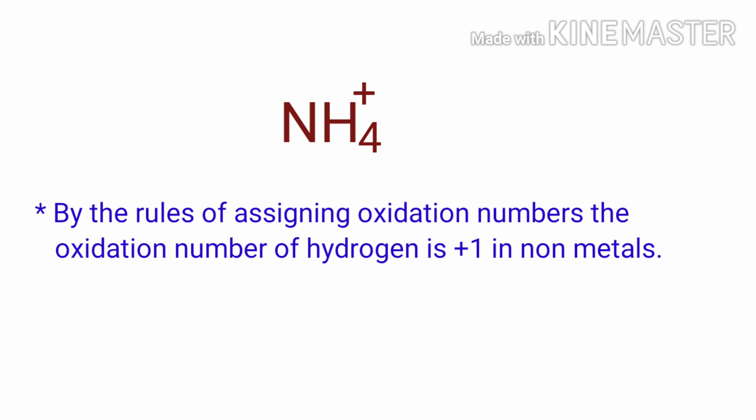By the rules of assigning oxidation numbers, the oxidation number of hydrogen is plus one in non-metals. We can write the oxidation number of the element above its symbol and the total oxidation number of atoms below its symbol.